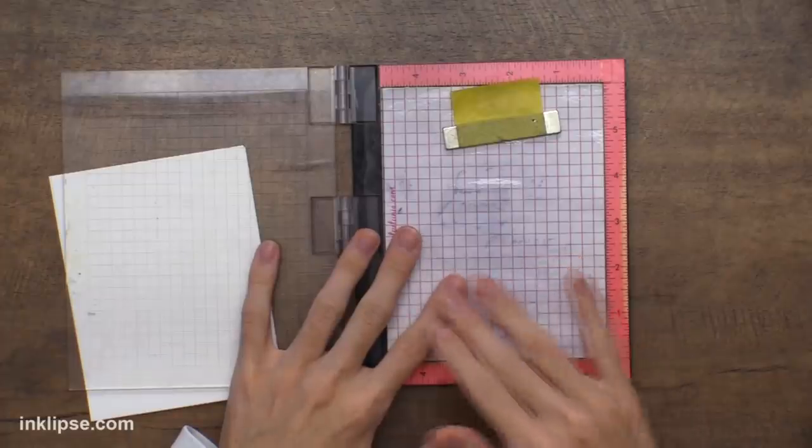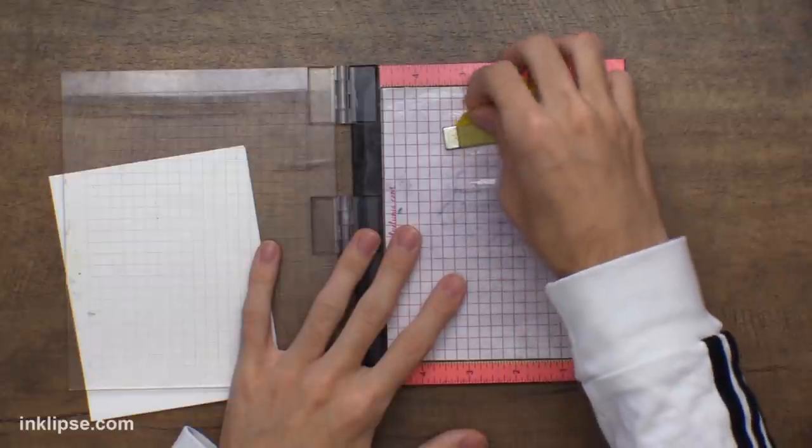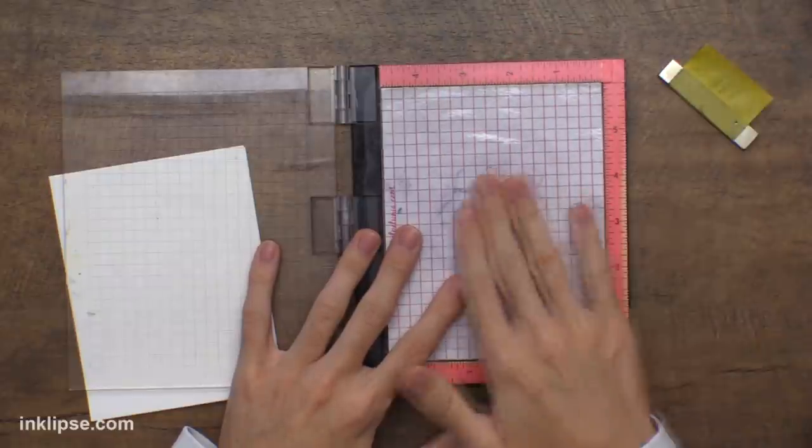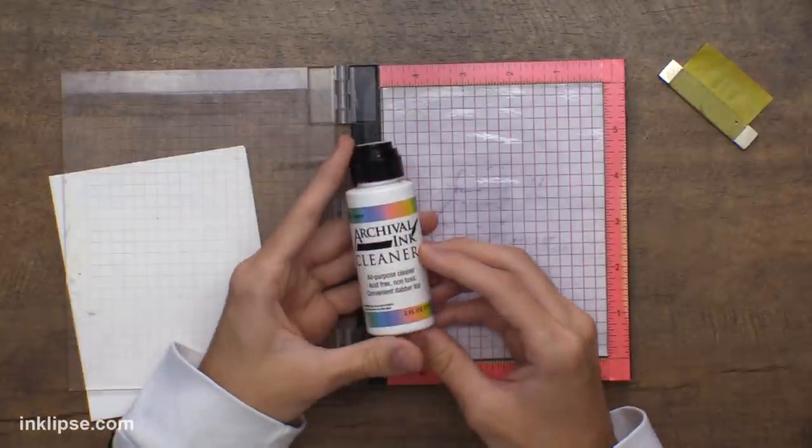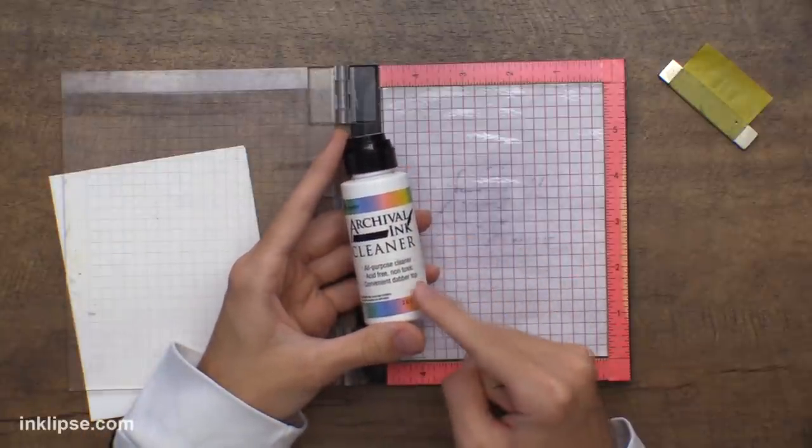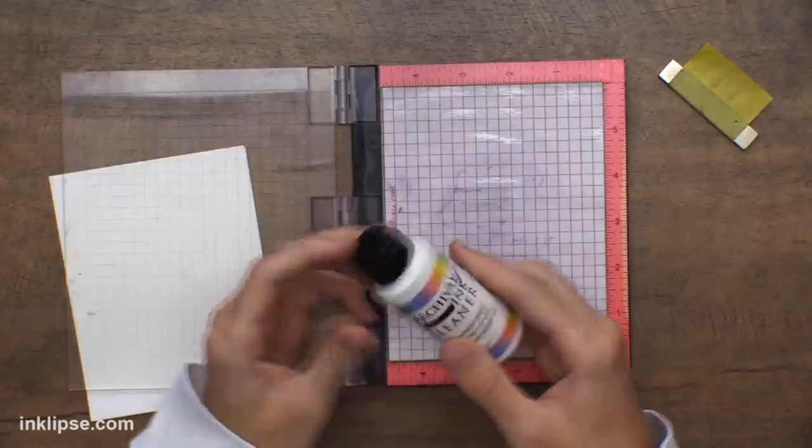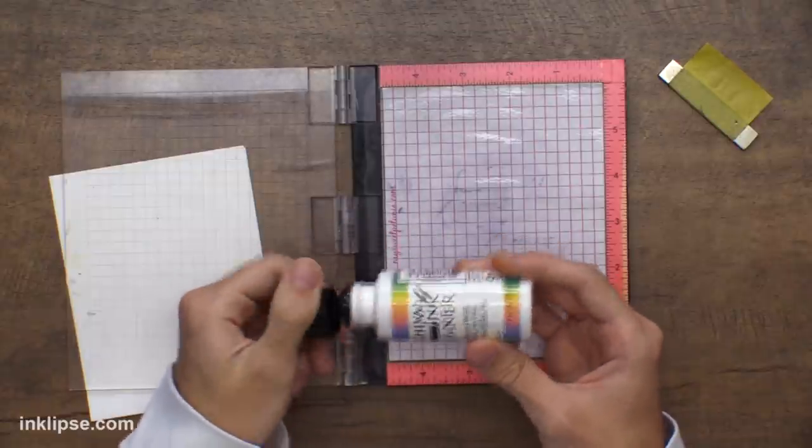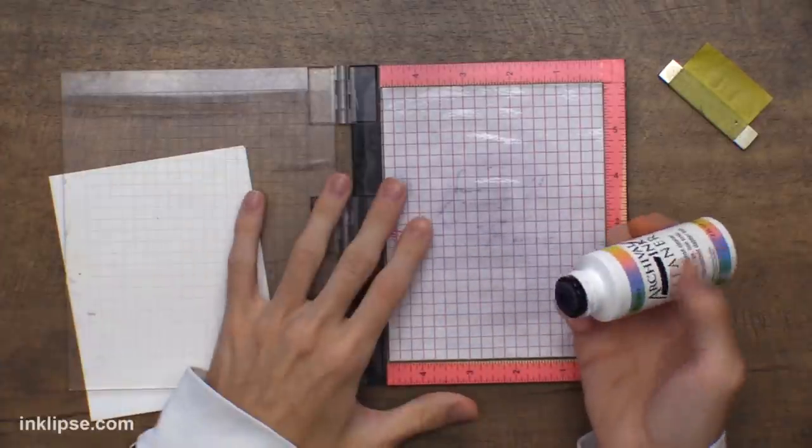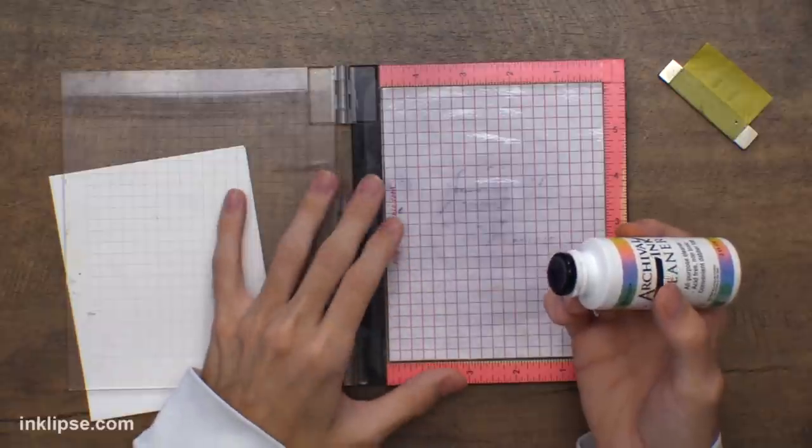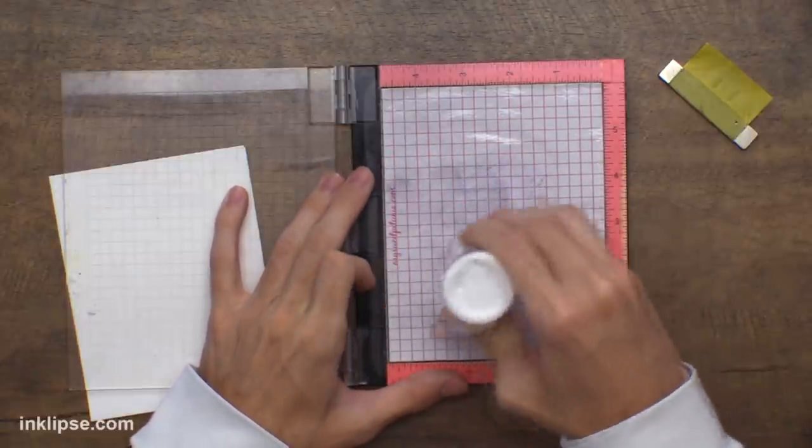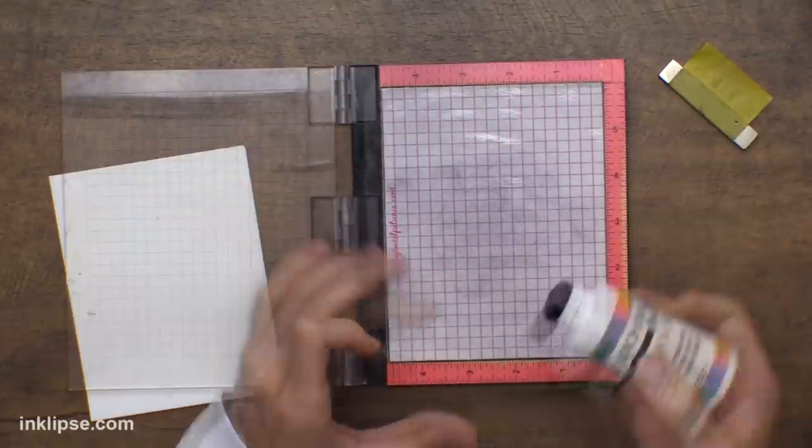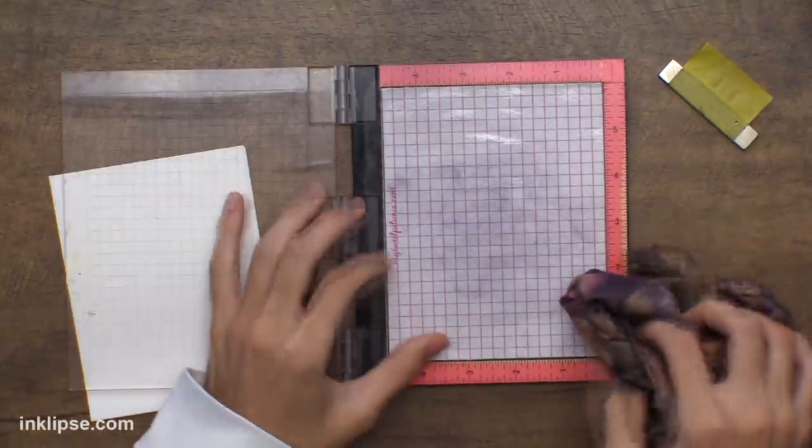Now let's get into something if I have something a little bit more harsh that I want to clean up. Here on my MISTI I have some archival ink that I haven't cleaned. And for this I like to use the archival ink cleaner. This is really nice because it's definitely going to take off your more harsh inks. Archival is a really strong permanent ink and so for this I like to use the cleaner that's meant for it just because I know it's going to get it off.